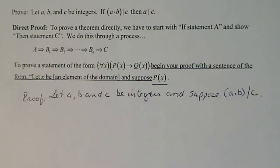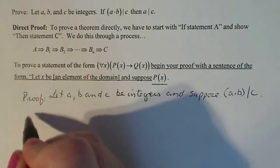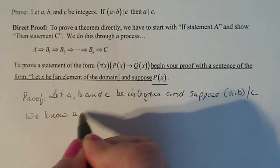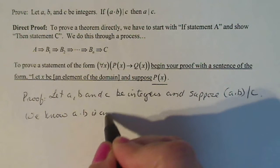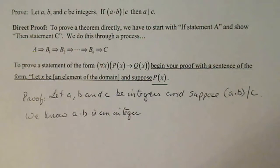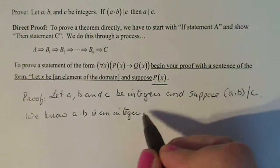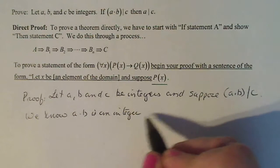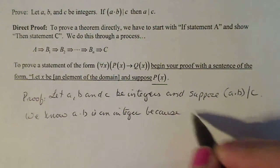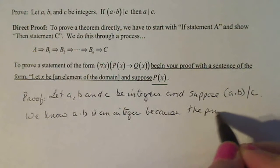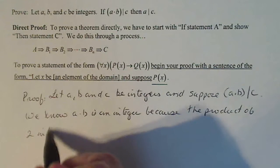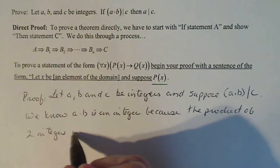We know first of all, we know a times b is an integer, mostly because a times b divides c, but a times b is an integer because the product of two integers is another integer.